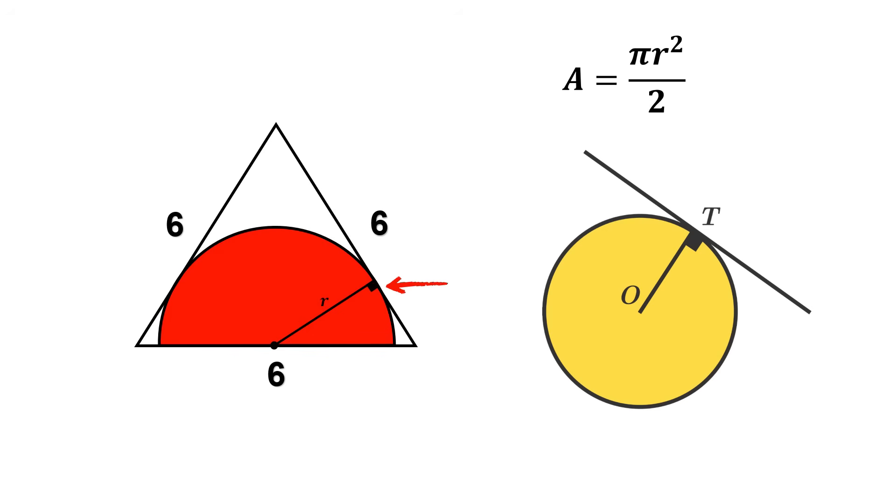So this angle becomes a perfect right angle, 90 degrees. That gives us a small right triangle, and this triangle is the key to solving everything.